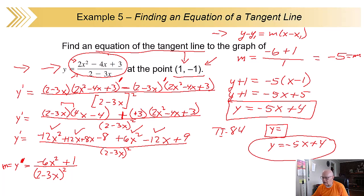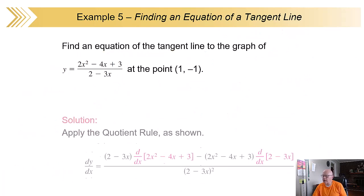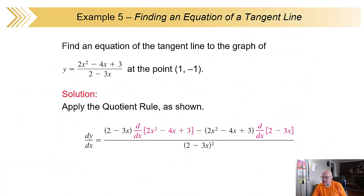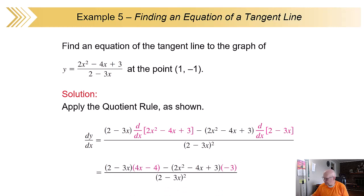Moving on — let me clear this so you can see what's going on. Here are the slide parts to it. You can see you've got the g — the function on the bottom — and the derivative of what's on the top, and the minus because it's the quotient rule. Here's the top function and the derivative of the bottom. And on the bottom, g squared.